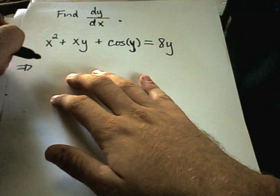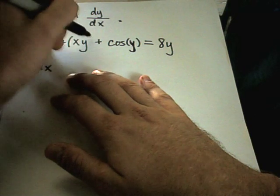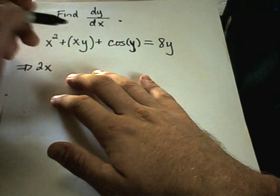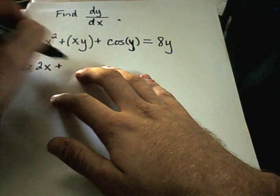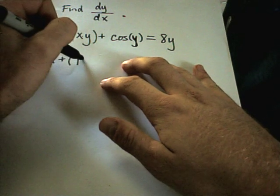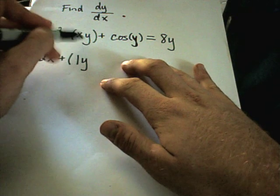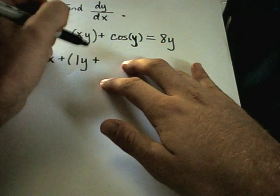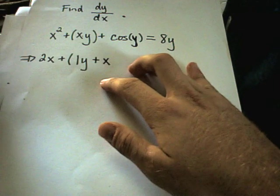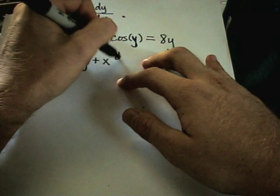The derivative of x² is just 2x. And I'm going to have to use the product rule on this next part because I have a product x times y. So if I take the derivative of x, I just get 1. I'll leave the y alone. I don't need a dy/dx because I didn't take the derivative of the y piece yet. Plus, now I'll leave the x alone. And the derivative of y is 1 dy/dx.